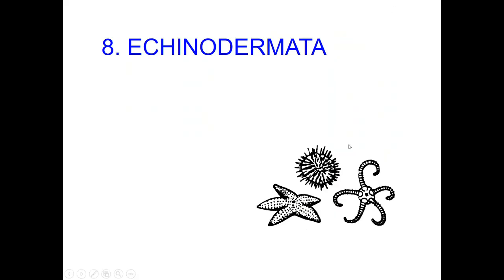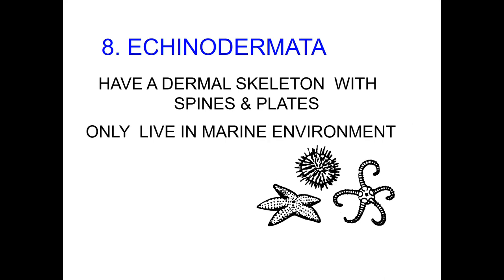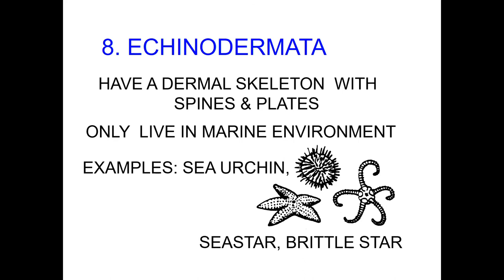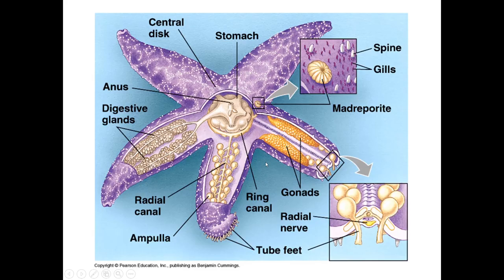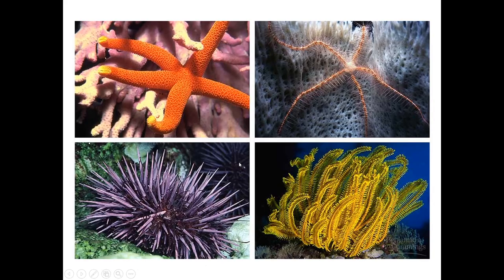Echinodermata — they have a dermal skeleton with spines and plates, and they only live in the marine environment. These are your sea urchins, sea stars, and brittle stars. They have a water vascular system — a network of hydraulic canals used for locomotion, feeding, and gas exchange — which extends into tube feet used for locomotion and feeding. Echinoderms appear to be radial but are bilateral in larval stages. They have spiny bodies, digestive glands, radial canals, and gonads.